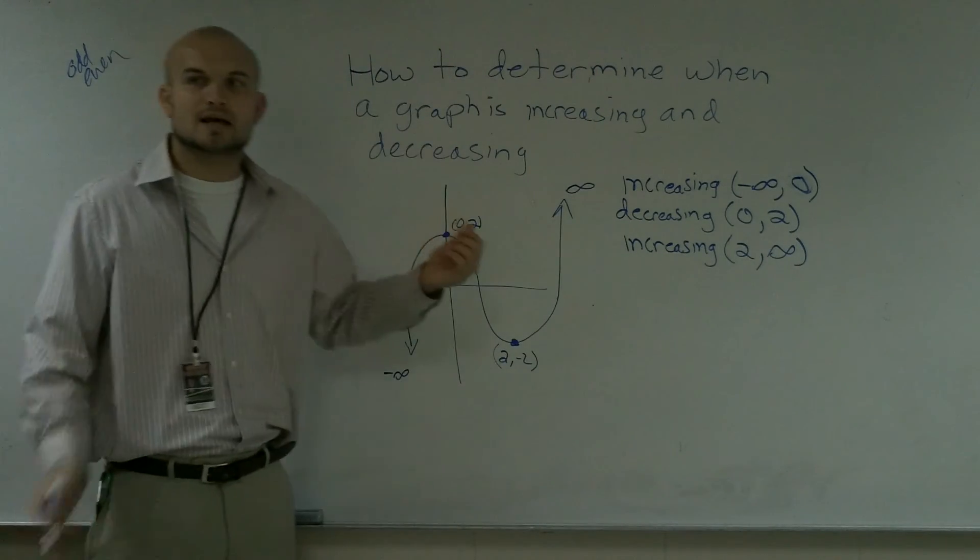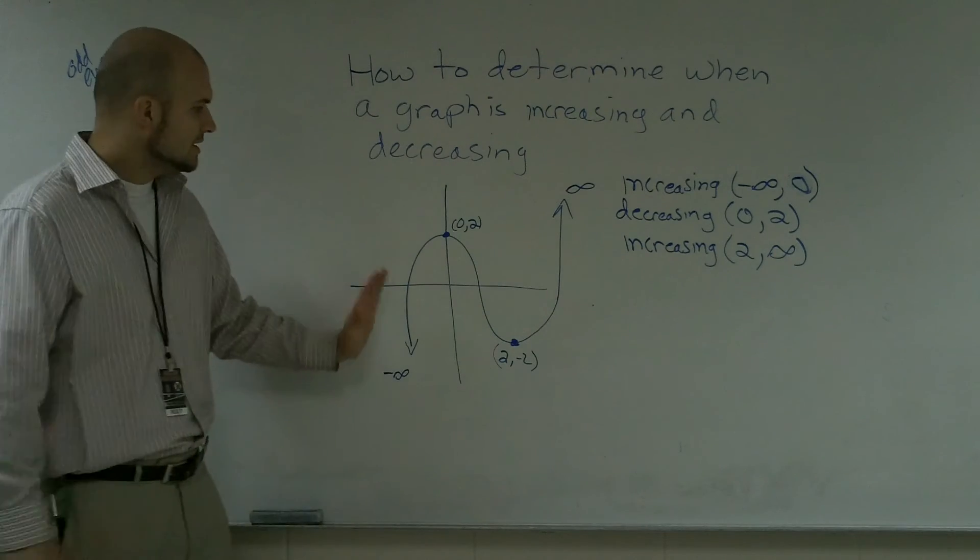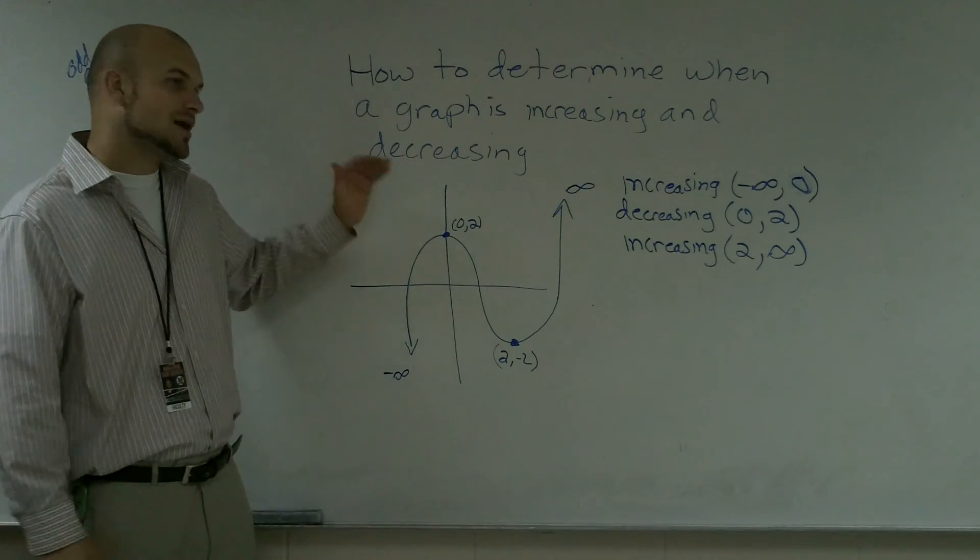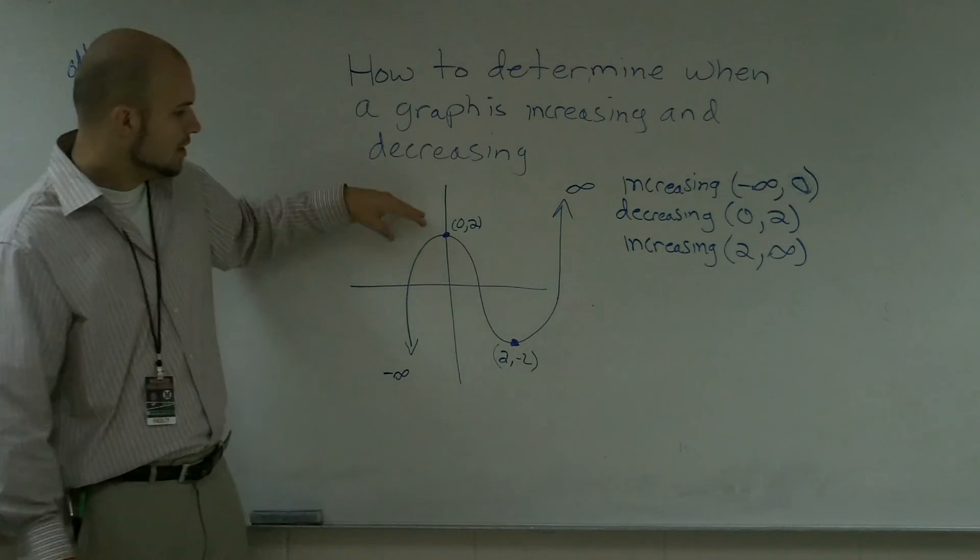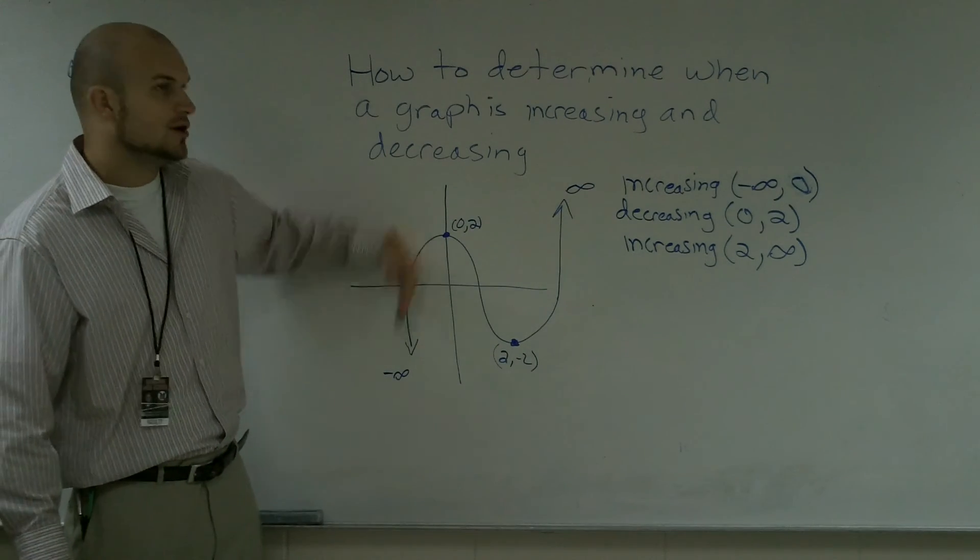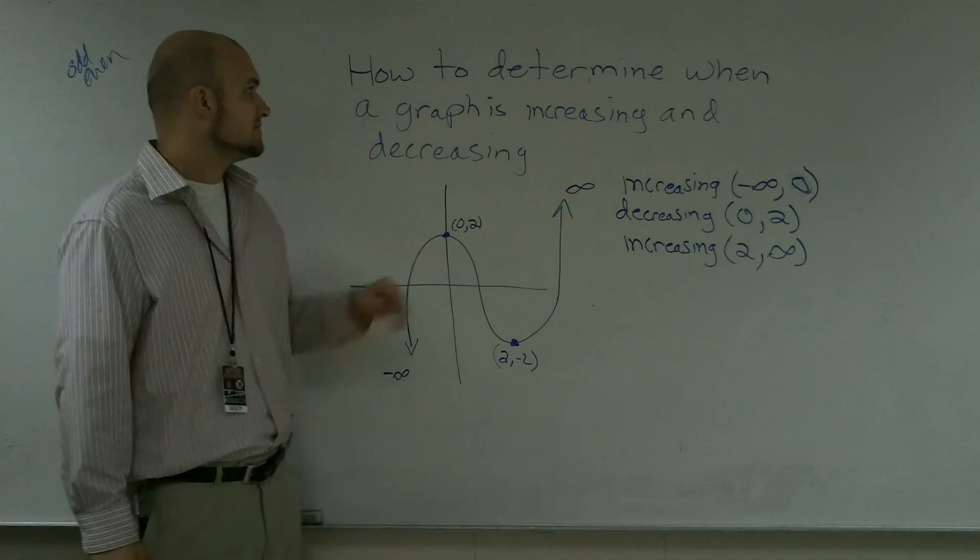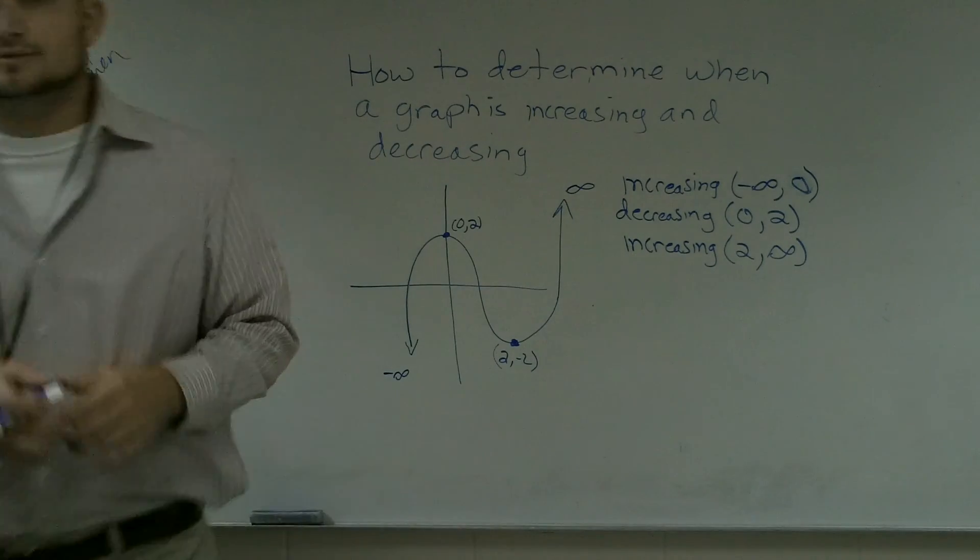The main important thing when you're trying to determine how a graph is increasing or decreasing: notice the direction that the graph is going, and notice the points where it either changes directions or where your arrows are heading as far as negative infinity or positive infinity. That's how you determine when a graph is increasing or decreasing.